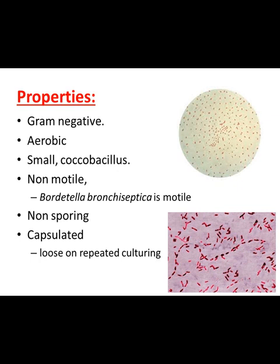Most species have no flagella so they are non-motile, but one species — Bordetella bronchiseptica — is motile. It is non-sporing. Recall that spore-bearing bacteria are Gram-positive — two genera: Clostridium and Bacillus. They are spore-forming organisms; the rest are non-spore-forming bacteria.